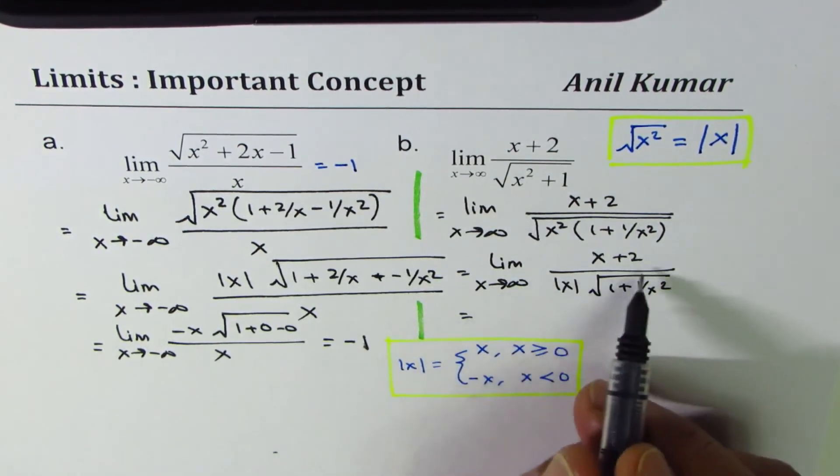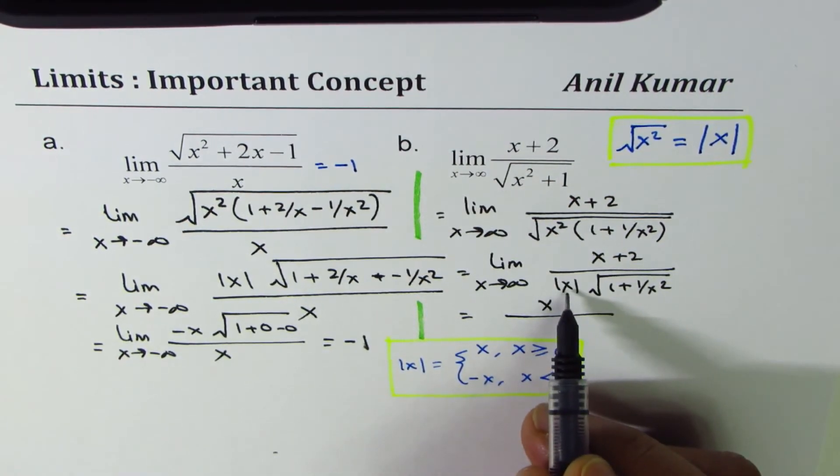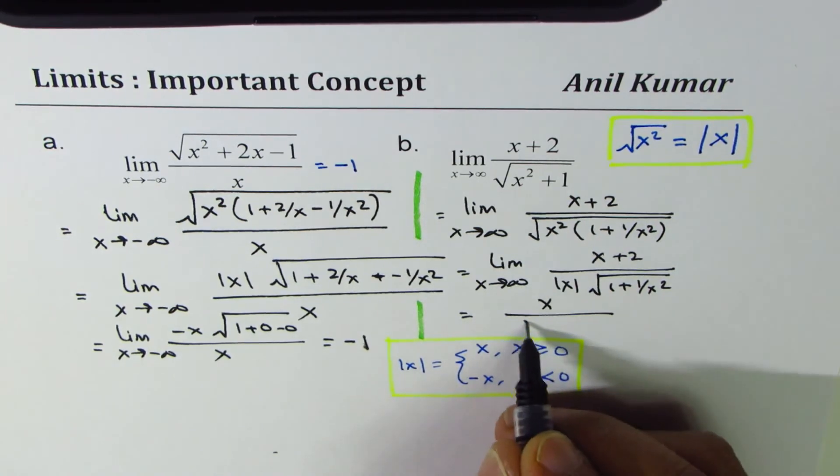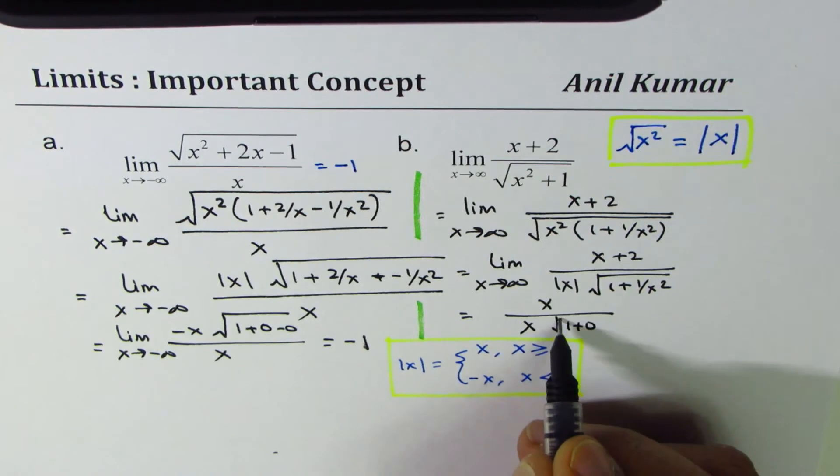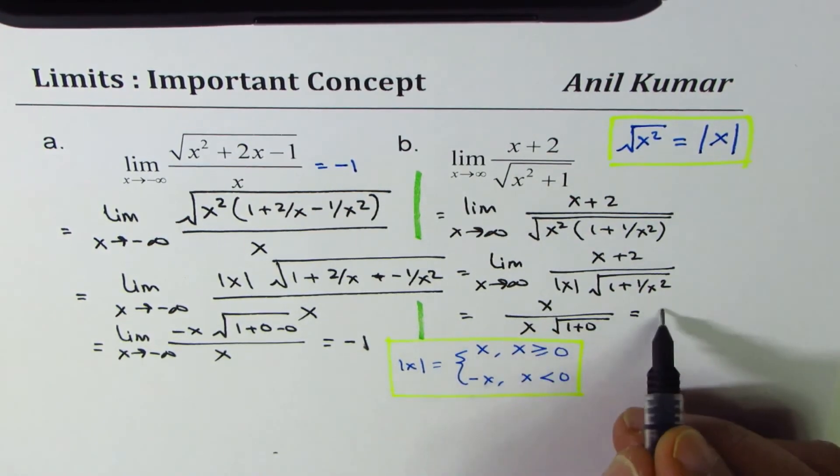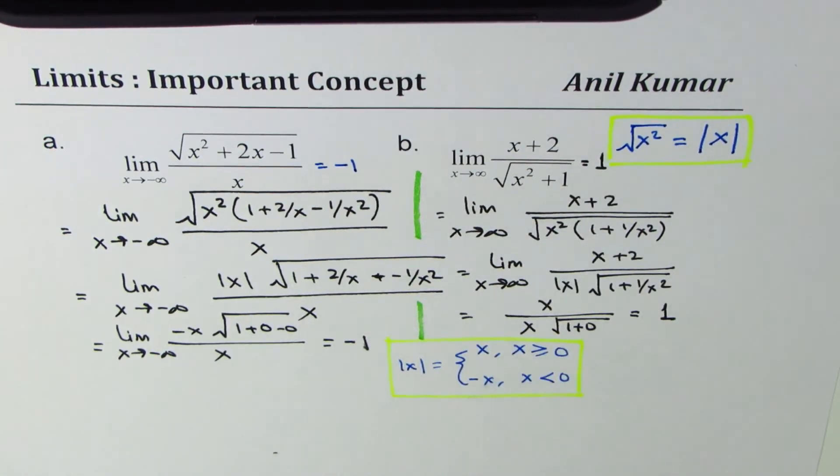Now, for a very large number, x is very large as compared to 2. I could write this as x over absolute value of x for positive is x. And here, we have square root of 1 plus 0. So what do we get here? x divided by x is 1. And therefore, this limit is 1.